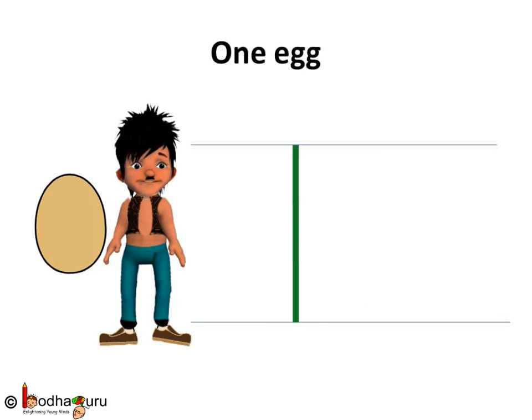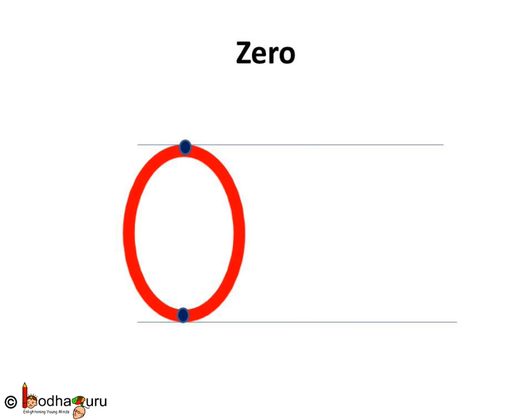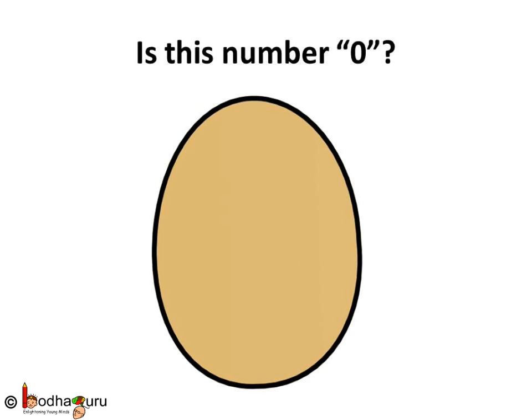Bola had one egg. He ate the egg. Now, no eggs are there. So, how many eggs does Bola have now? Zero. Yes, Bola has zero eggs. Hey, look — the shape of the egg also looks like a zero. Right?